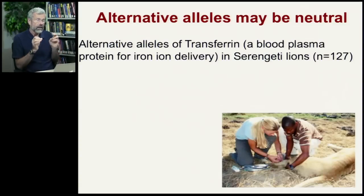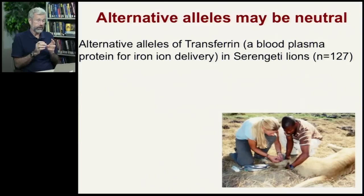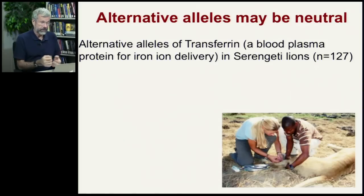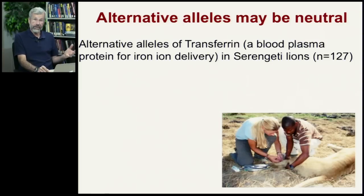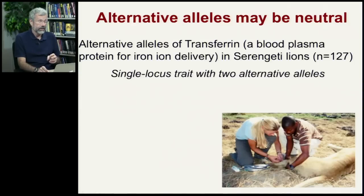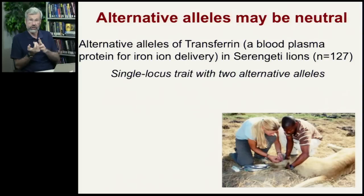Let's talk about neutral alleles. In our studies of African lions in the Serengeti in Tanzania, at a particular locus that codes for a blood protein called transferrin, there are several alternative alleles. We go out and dart lions every now and then. While the lion is asleep, we collect a blood sample and run it through a series of assays, looking for which form of the transferrin protein different lions possess. Transferrin is a simple Mendelian, single-locus trait with just two alternative alleles.